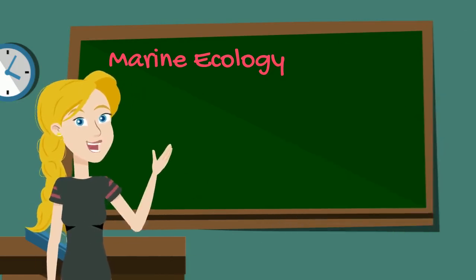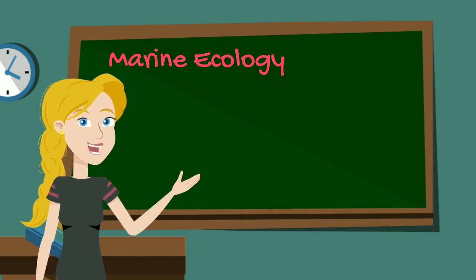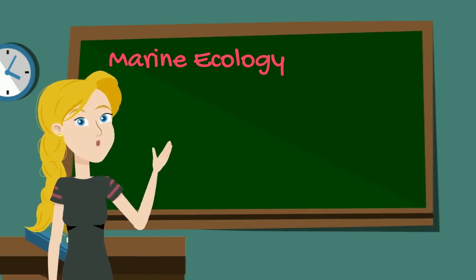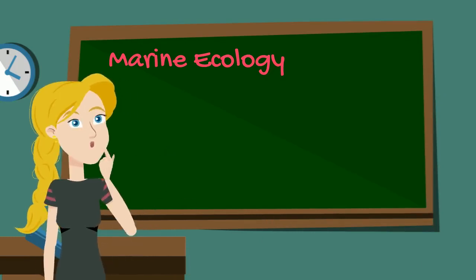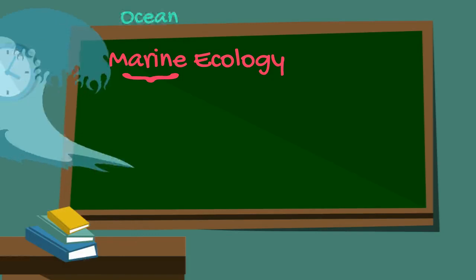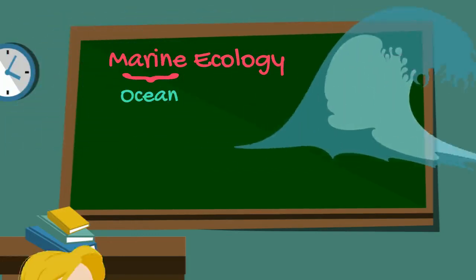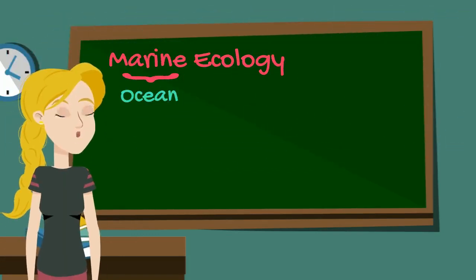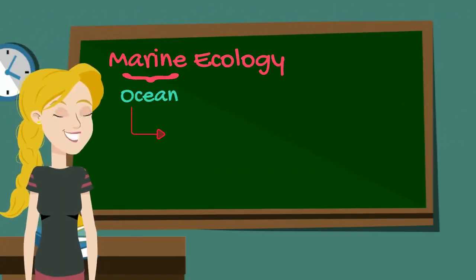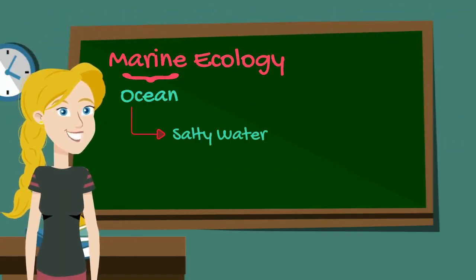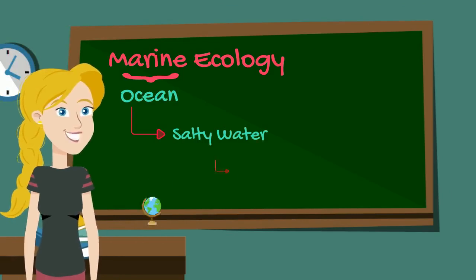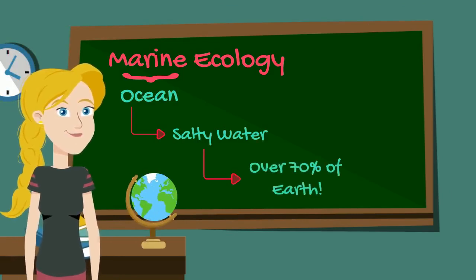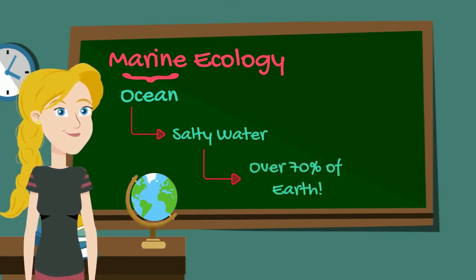Let's start by defining marine ecology. What do you think of when you hear the word marine? Of course, you think of water and the ocean. Marine is a word that describes oceans and seas where the water is salty. Over 70% of the earth's surface is covered with this salty water.